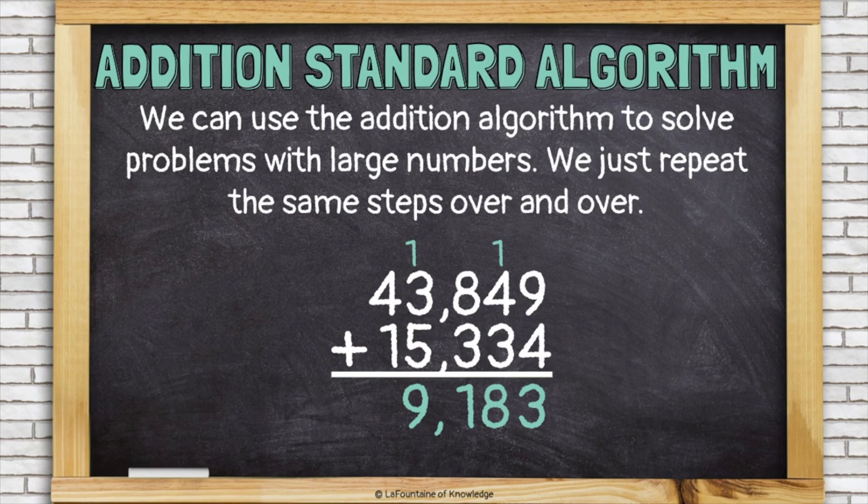1,000 plus 3,000 plus 5,000 is 9,000. And then I have four groups of 10,000 plus one group of 10,000, or 5. 59,183 is the answer to this addition problem.